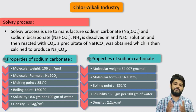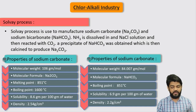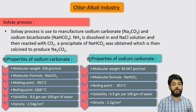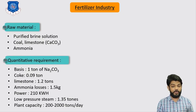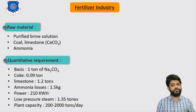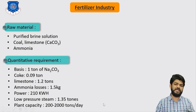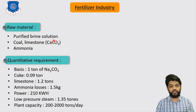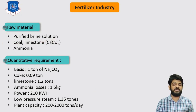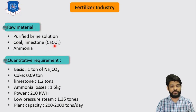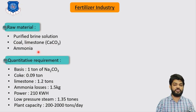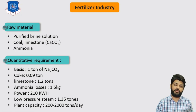Let us discuss what raw materials are needed and what chemical reactions take place to produce sodium carbonate and sodium bicarbonate. We will see both products in the same process with a single flow sheet. The raw materials required are: purified brine solution, coal and limestone (CaCO3), and ammonia. These are the three raw materials needed to produce sodium carbonate and sodium bicarbonate.